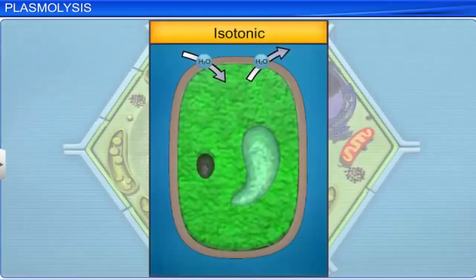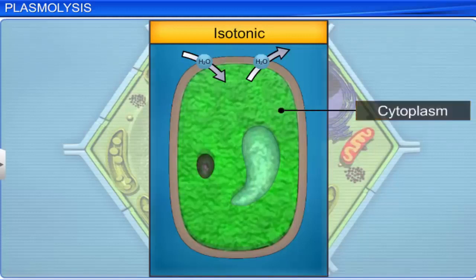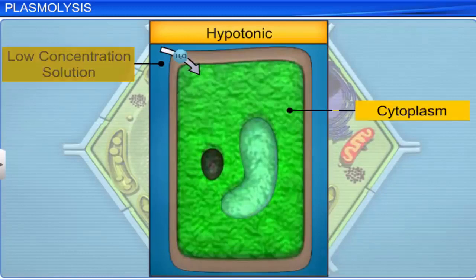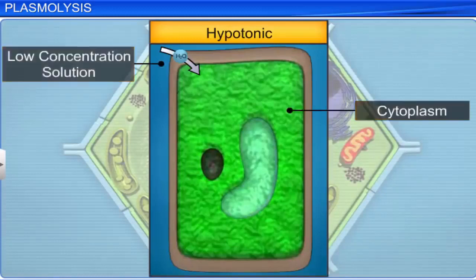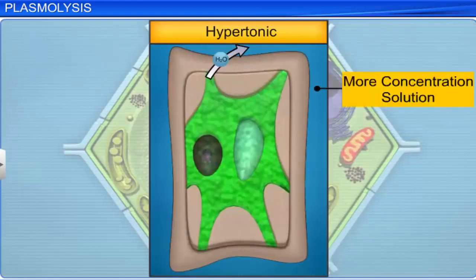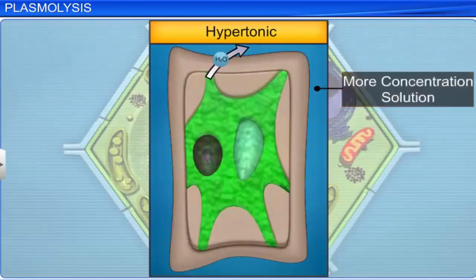When the concentration of the external solution is the same as that of the cell cytoplasm, the solution is said to be isotonic — such a solution balances the osmotic pressure of the cell cytoplasm. If the concentration of the external solution is lower than that of the cytoplasm, it is said to be hypotonic. On the other hand, if the external solution is more concentrated — that is, it has more solutes — it is said to be hypertonic.